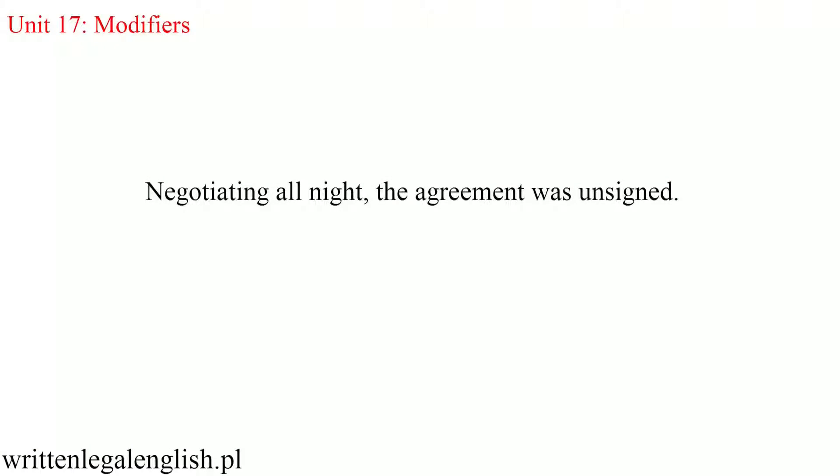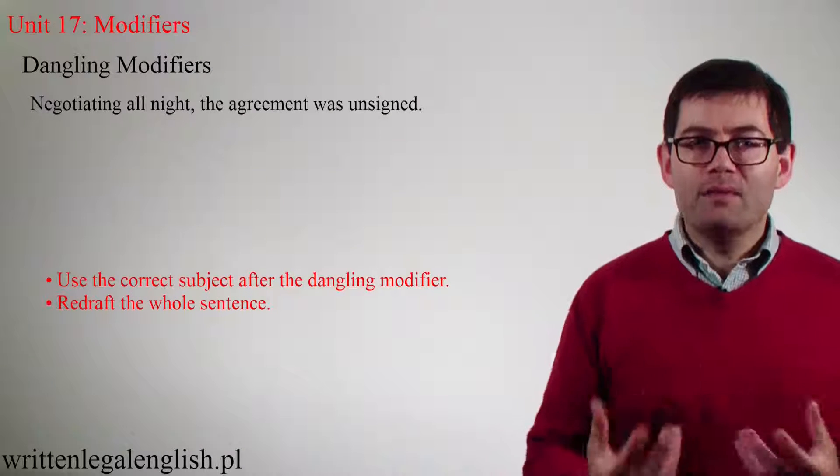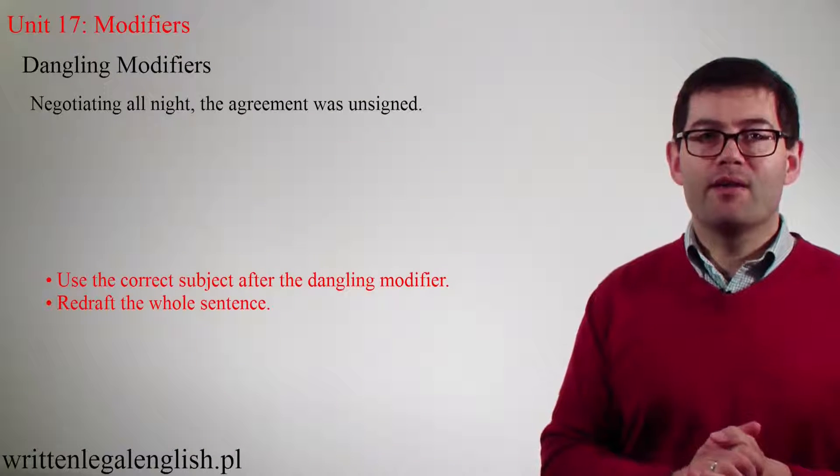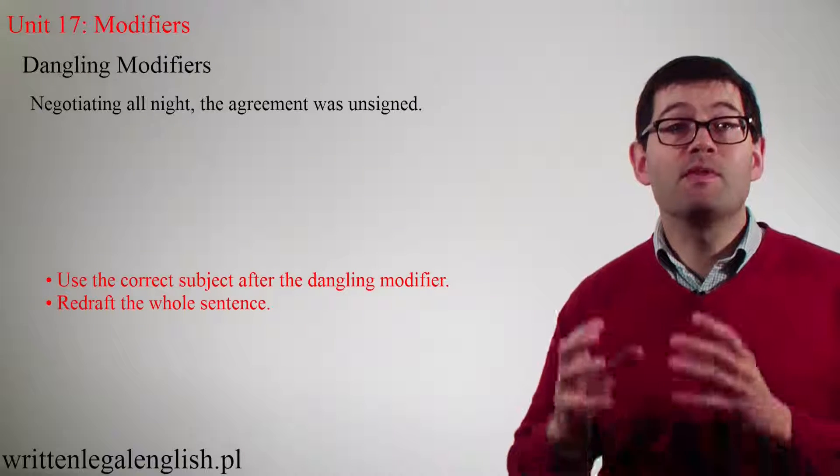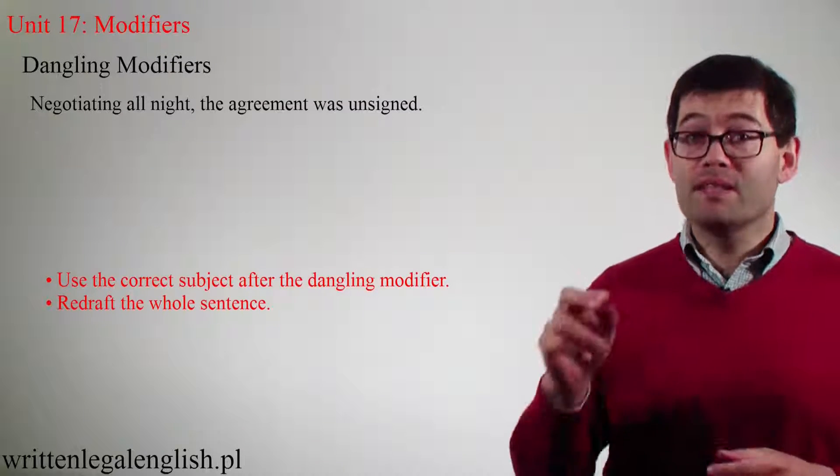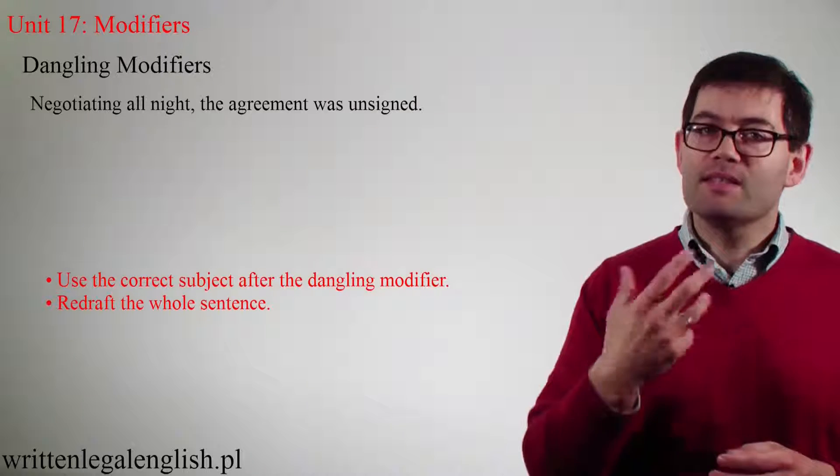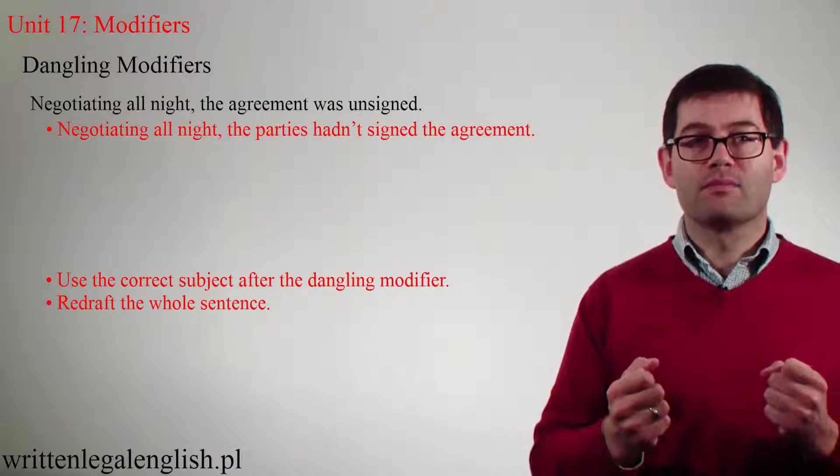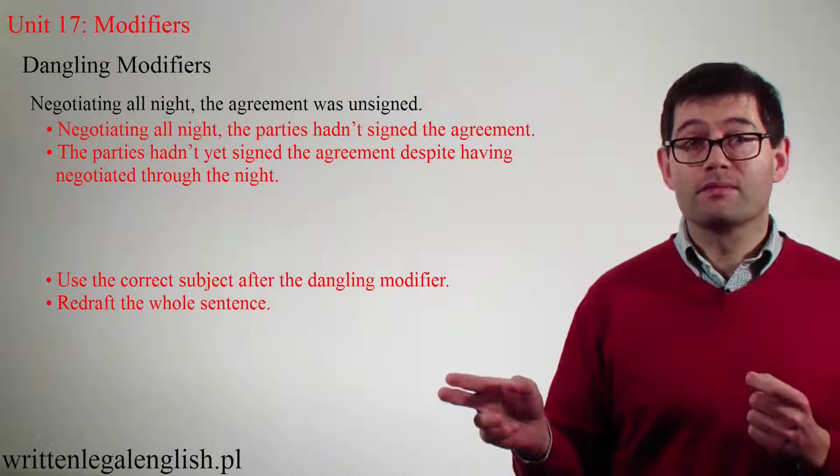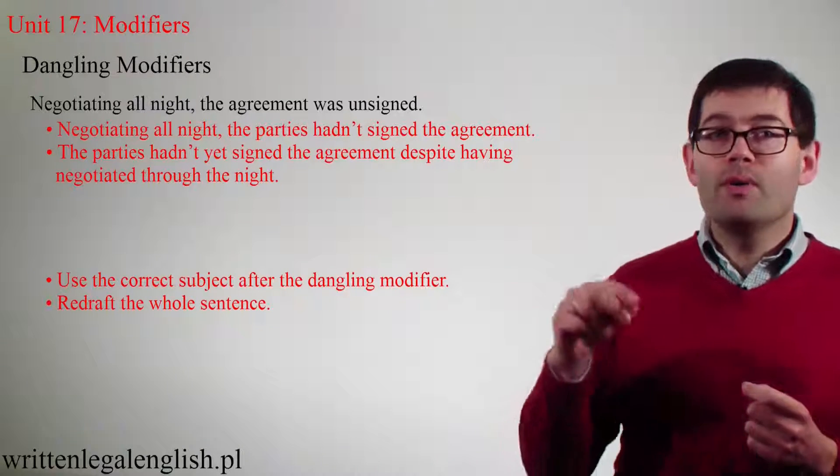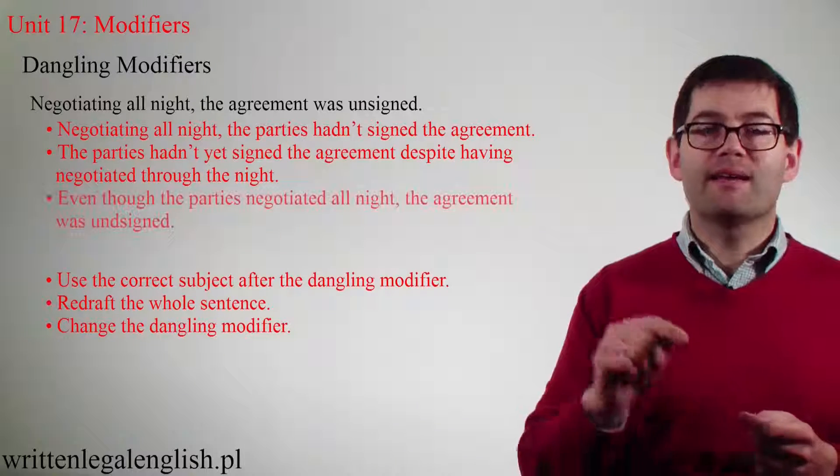Okay, take a second to read this example. Here we've got another dangling modifier error. The agreement clearly is not capable of negotiating all night. Only the parties involved are. So let's correct this by using the correct subject, or by redrafting, or we can do something else. We can change the dangling modifier.